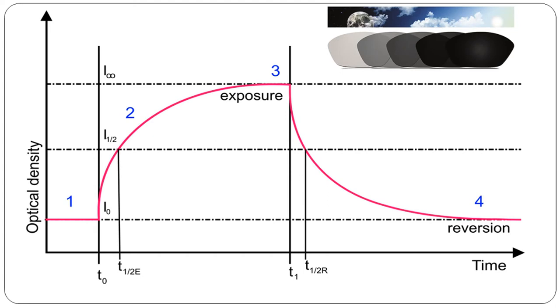There are 2 half-lives, one is for exposure stage and second is in the reversion stage. In the reversion stage the colored form is converted into original form which is called colorless form.